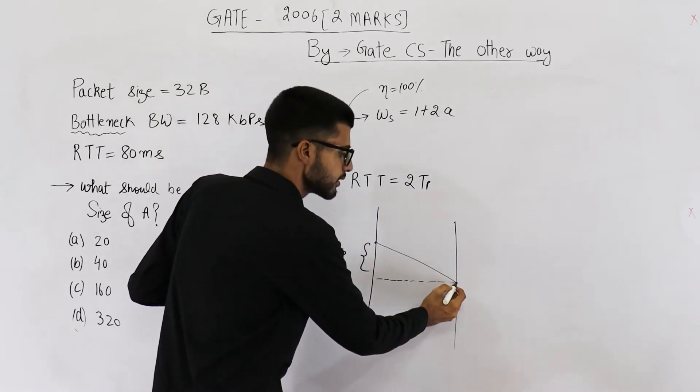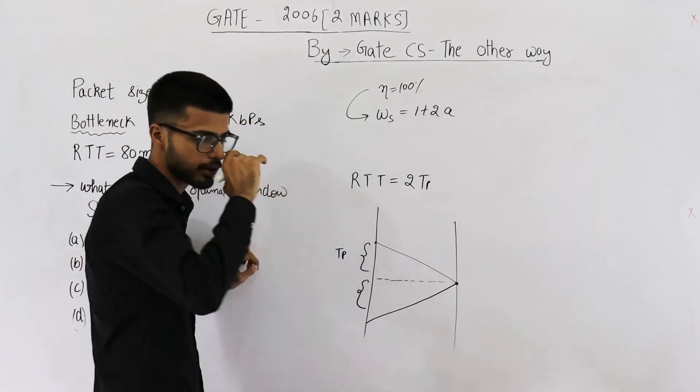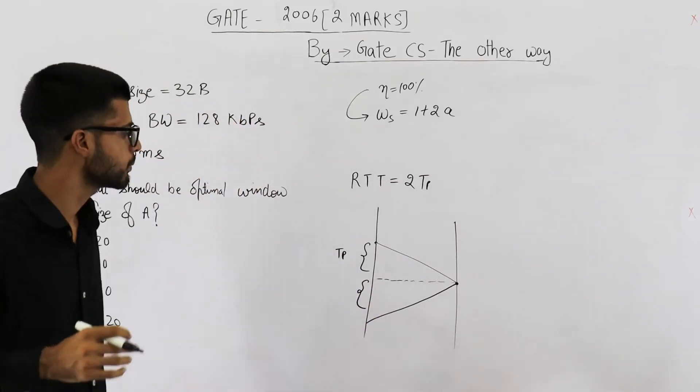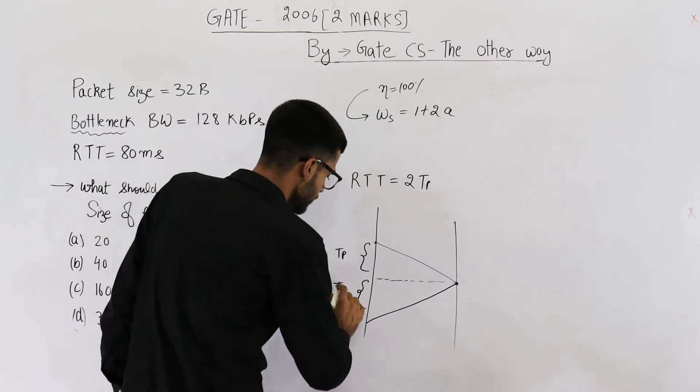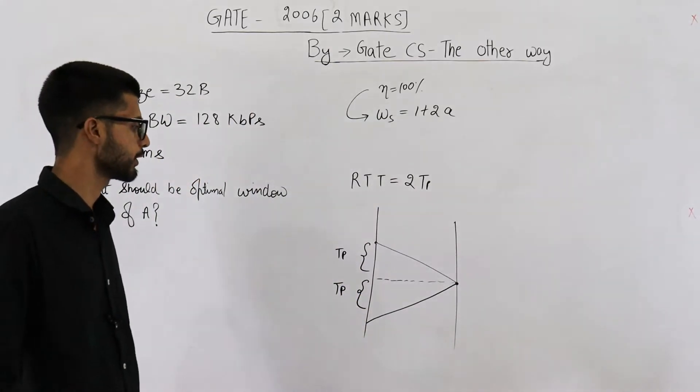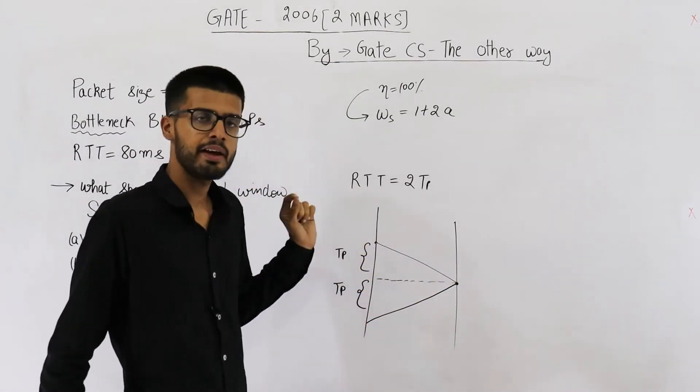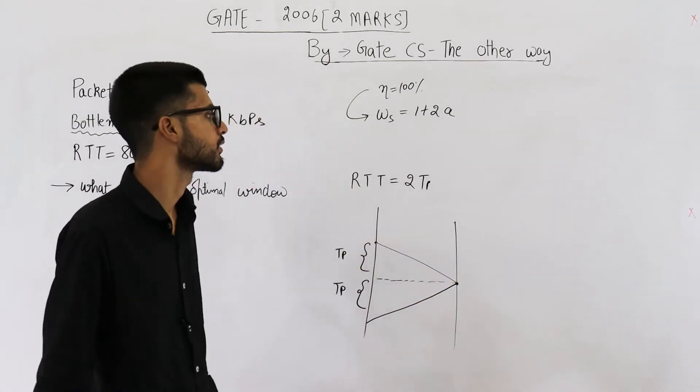Now this receiver will send some response back. Again the response is very small. Acknowledgement packets are very small. This will also require propagation delay, the time equal to propagation delay. This is called the round trip time.